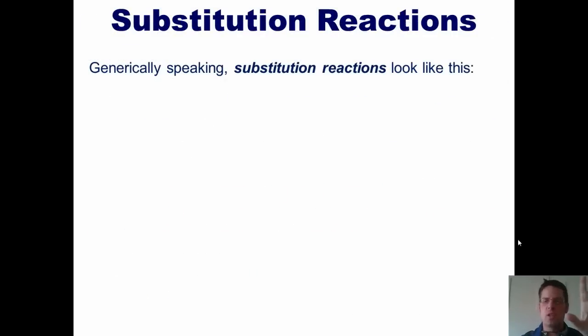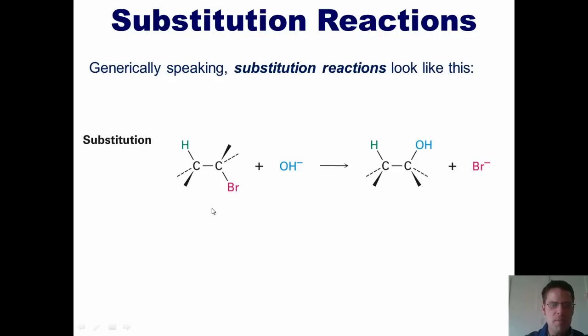So generally speaking, substitution reactions look like this. There's some type of reactant that has a group, in this example a bromine, that interacts with some type of reagent, in this case hydroxide, in which a portion or all of this major reagent takes the place of the group in our reactant. So as you look at this particular reaction, you can see, going from left to right, that this reactant which possesses a bromine appendage has been converted to a product that now has an OH or hydroxy appendage in the place of the bromine.